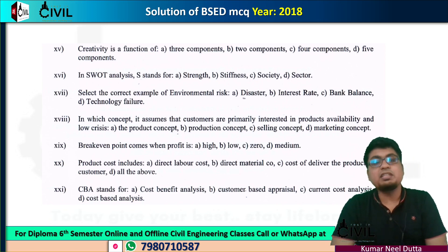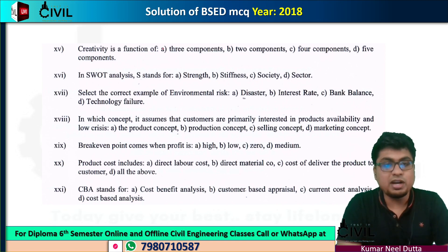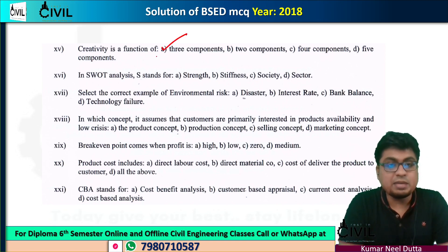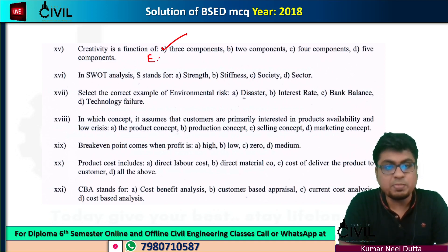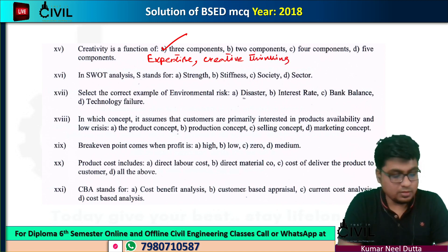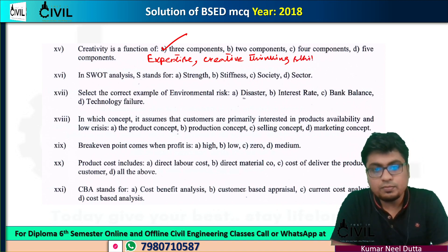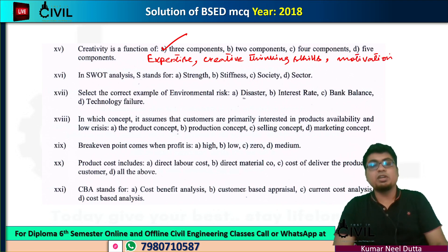Number 15: creativity is a function of three components. The three components are: expertise, creative thinking skills, and motivation. So these three are the functions of creativity.